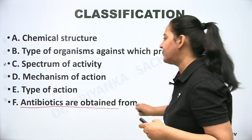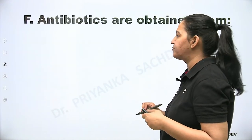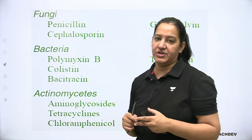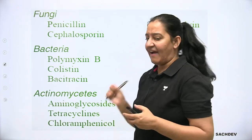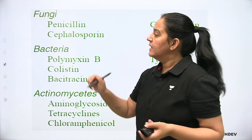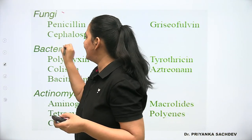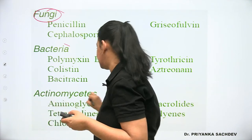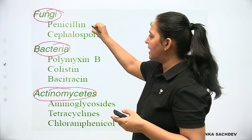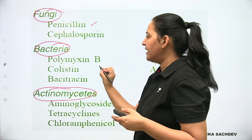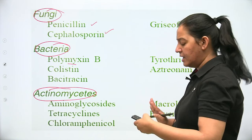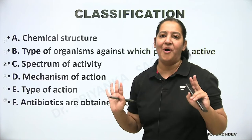So to summarize, antibiotics are classified by six ways: (1) chemical structure — 17 categories, don't memorize; (2) type of organism they act on — antibacterial, antiviral, antifungal, antiparasitic; (3) spectrum — narrow or broad; (4) mechanism of action — four categories (cell wall, cell membrane, nucleic acid, protein synthesis); (5) type of action — bactericidal or bacteriostatic; (6) source organism — fungus, bacteria, or actinomycetes.